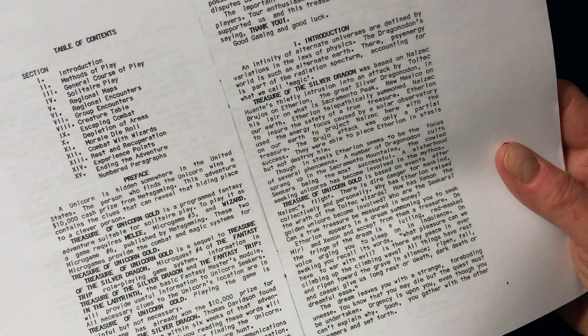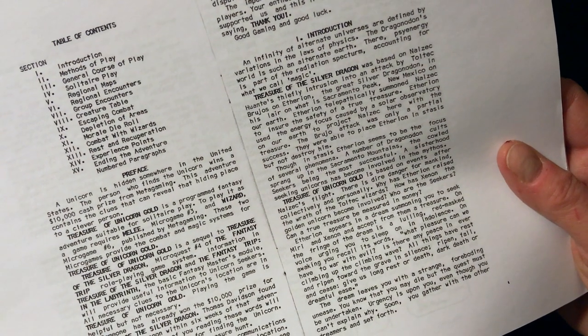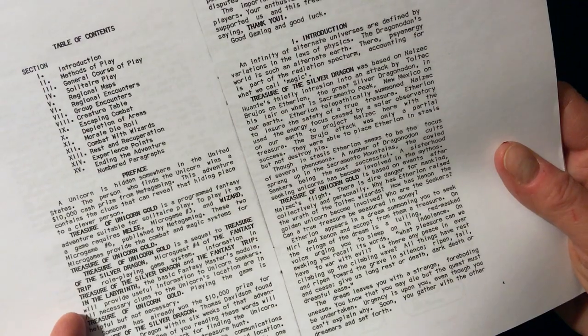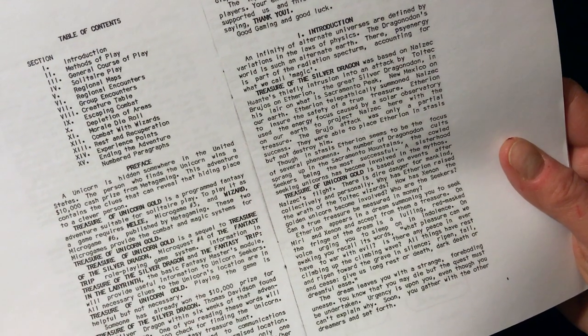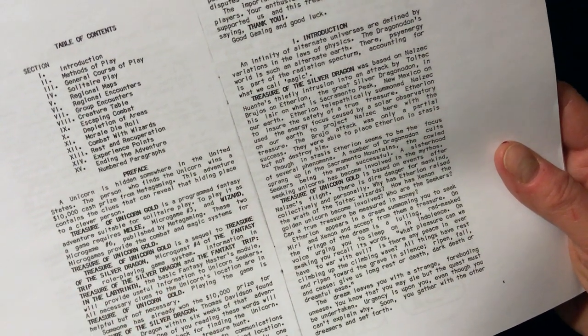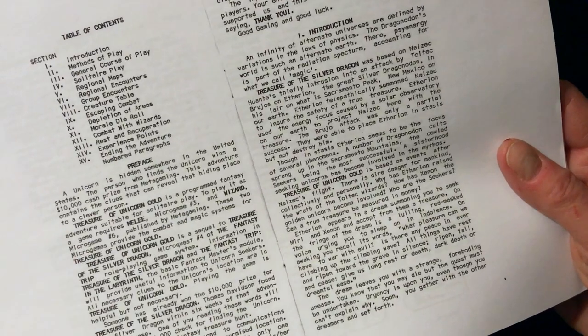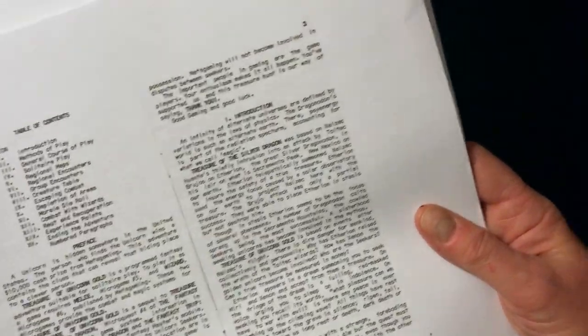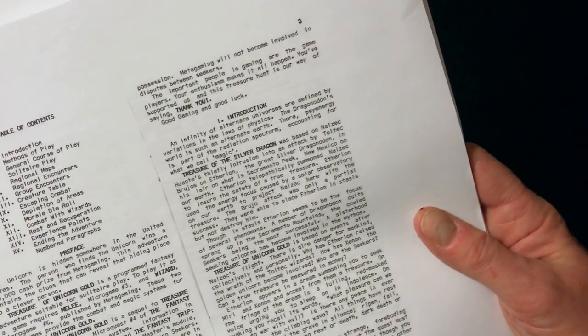It is described as a programmed fantasy adventure suitable for solitaire play. It's described as a sequel to Treasure of the Silver Dragon, which was Micro Quest number four of The Fantasy Trip role-playing game system. It says information in The Fantasy Trip and In the Labyrinth can be used here as well as the rules for Wizard and Melee, and I'm doing all of that, again adding on some material that I am bringing to it.